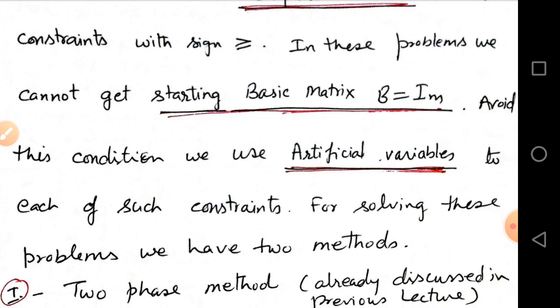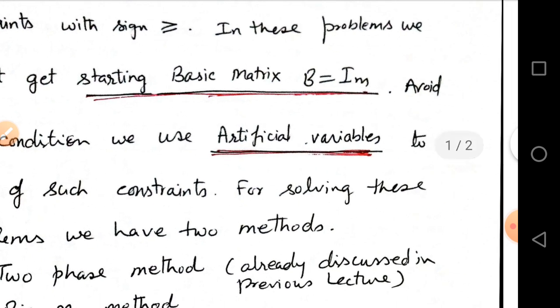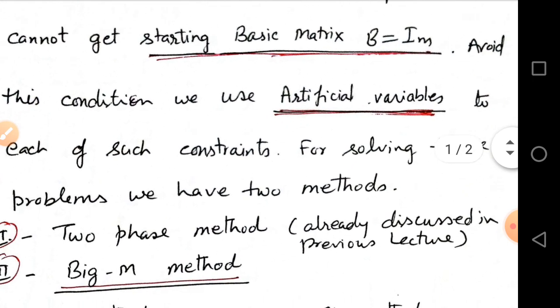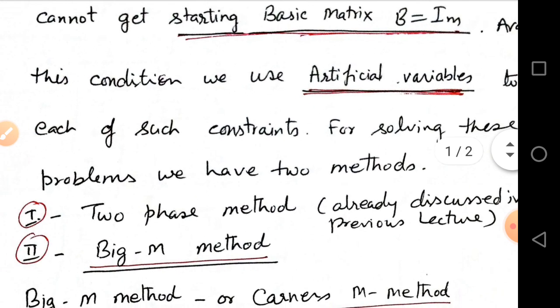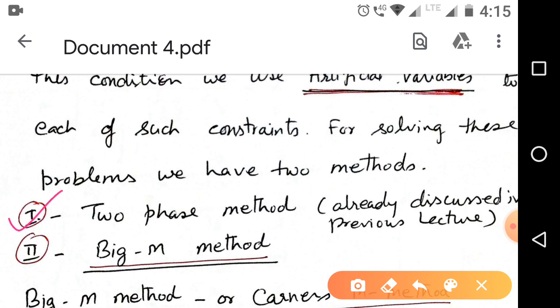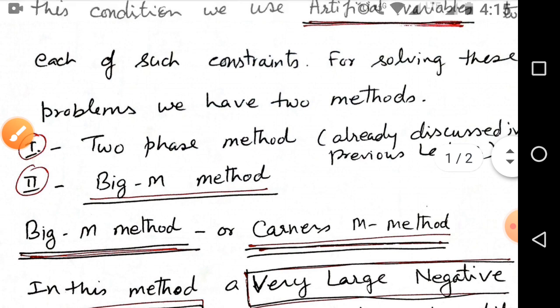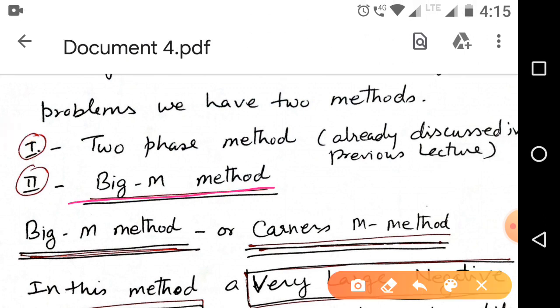For solving these type of problems where we have artificial variables, we have two methods. First is two phase method and second is big M method. Two phase method we already discussed in previous lecture. Today we will discuss big M method or Charnes M method.